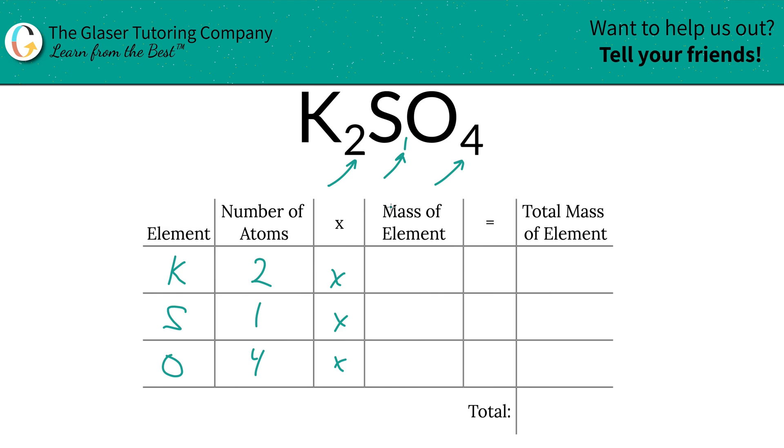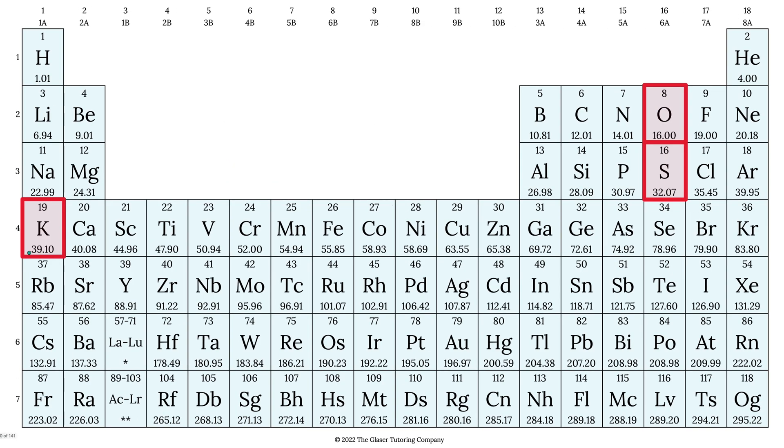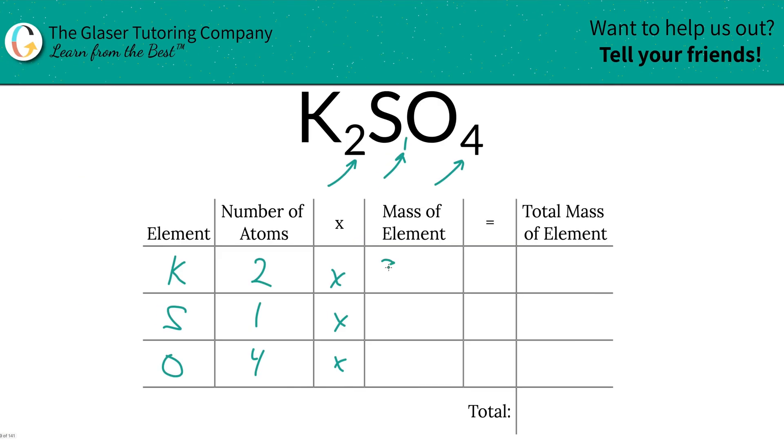Then we're going to multiply it by the mass of each particular element. We find those masses on the periodic table. So potassium is 39.10, sulfur is 32.07, and oxygen is 16.00. So let's write them in. This is going to be 39.10 for potassium, sulfur is going to be 32.07, and then oxygen is 16.00.